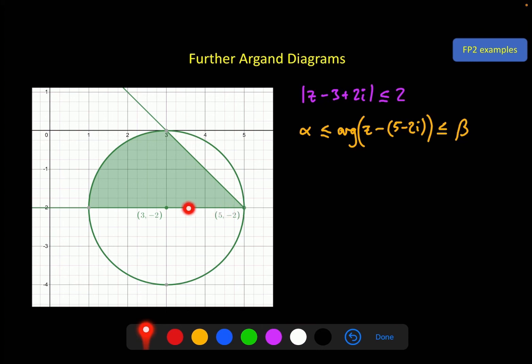argument of z minus 5 minus 2i, another solid line, another solid line, and another angle. The bigger angle is quite easy, that's pi, and again because we can see the scale 1 to 1, this is a pi by 4 angle, which means this is 3 pi by 4. So my smaller angle is 3 pi by 4, argument z minus 5 plus 2i less than or equal to pi.